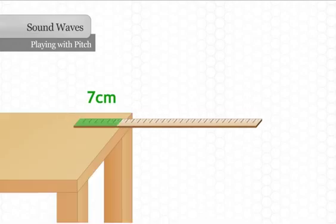Place the ruler so the first 7 centimeters are flat on the counter and the rest of it is extending off the edge of the counter.